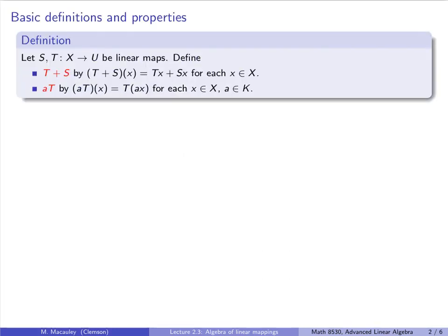We can add linear maps together and multiply them by scalars in the obvious way. We gave these definitions for linear scalar functions a couple of lectures ago, and the idea is the same here. If s and t are linear maps from X to U, then t plus s is defined on a vector x to be tx plus sx. And a times t, for some scalar, is a linear function defined on a vector x to be t of ax.